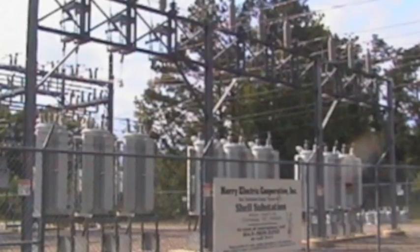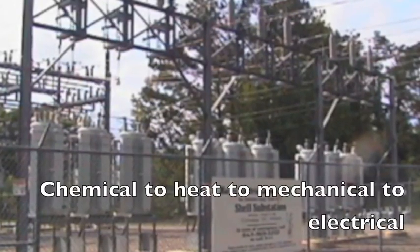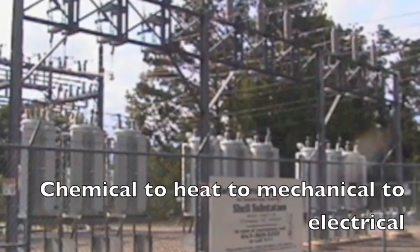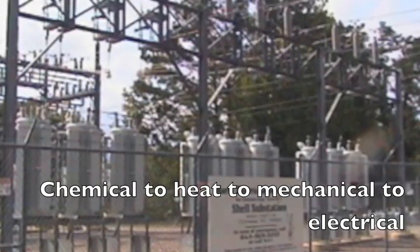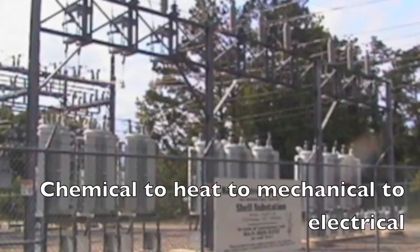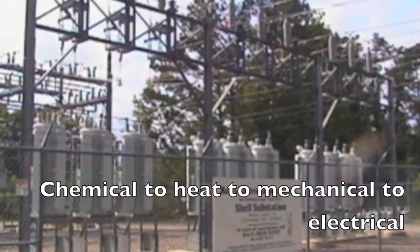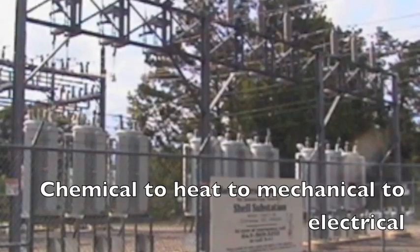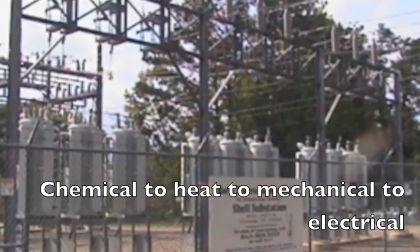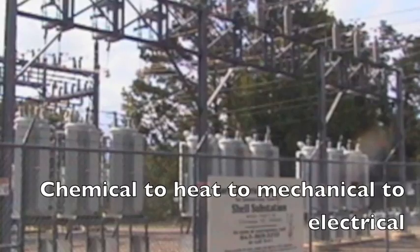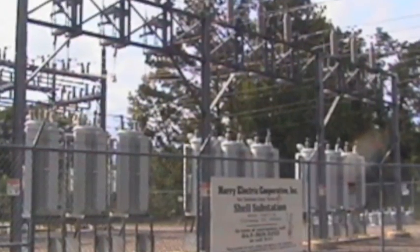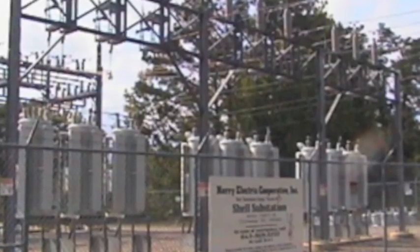A more complicated example would be a generator. The electricity from your house more than likely came from a power plant, which uses generators. So, first, the fuel has to be burned, which is chemical energy changed to heat energy. Then, it's changed to mechanical energy, because the generator moves from the heat. Then, the mechanical energy from the generator is transformed to electrical energy, and then back to whatever you need it for at your house. Light, sound.